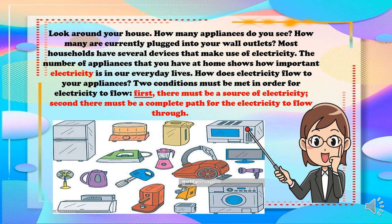How does electricity flow to your appliances? Two conditions must be met in order for electricity to flow. First, there must be a source of electricity. Second, there must be a complete path for the electricity to flow through.